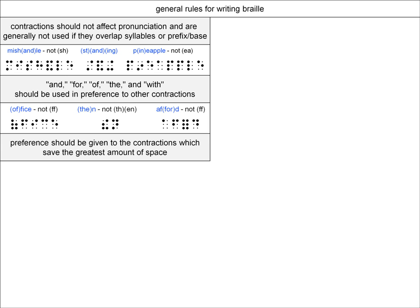The next very important rule is that preference should be given to the contractions which save the greatest amount of space. In some cases, this will trump the rule above. So, the word wither would use the WITH and ER contractions instead of the THE contraction, since fewer cells would be needed. Same idea with the word bubble — using the BLE contraction instead of the BB contraction saves one cell.